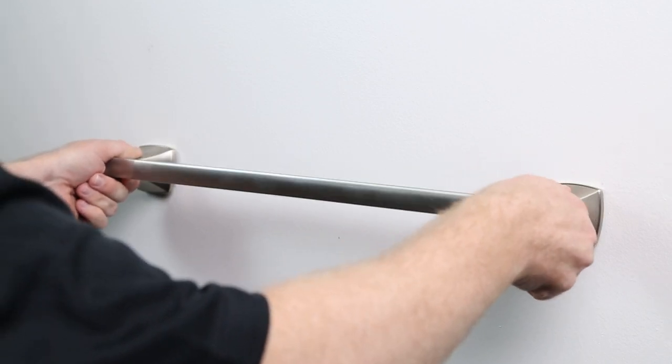Note that the posts are marked R and L. Slide the two posts into the ends of the towel bar. Slide the posts onto the top of the brackets and then tilt both posts down. You'll know it's secure when you hear it click into place.